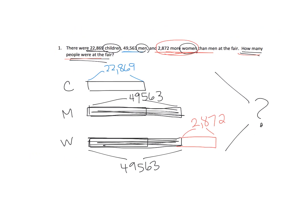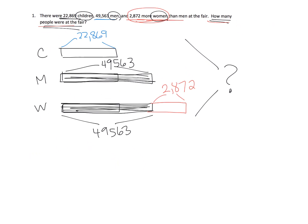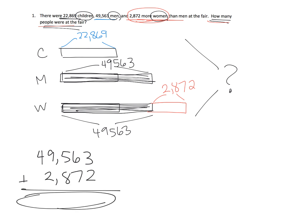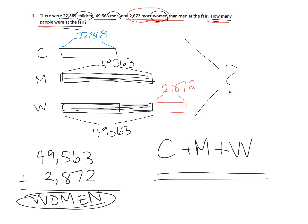So now we've mapped out our solution strategy. The first thing we need to do is figure out how many women, so we're going to add 49,563 plus 2,872 — that gives us the number of women. And then once we've got the total number of women, we're going to add the children plus the men plus the women. It's a two-step problem: first find the number of women, then add it to the children and the men.